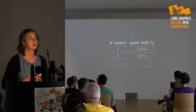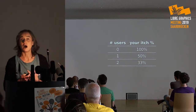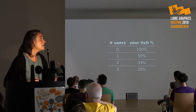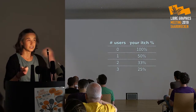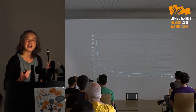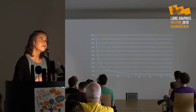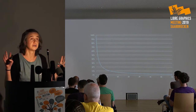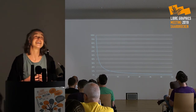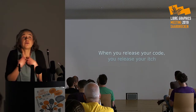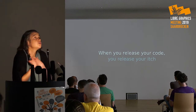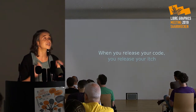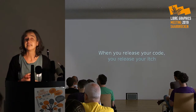When a second user comes along your itch is now 33% yours. When a third user comes along it's 25% yours. By the time you reach 50 users your itch is 2% yours. These people can keep telling themselves 'this is my itch,' but that doesn't change the fact that it really isn't anymore. The only way of keeping your itch your own is keeping the source code to yourself — but the moment you release the source code to the world, you need to come to terms with the fact that you have also released your itch.